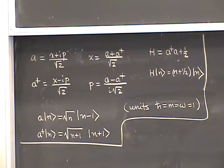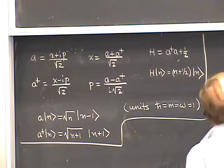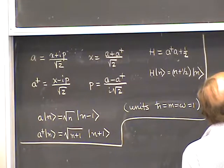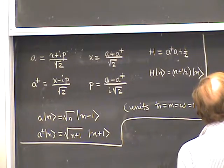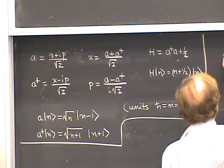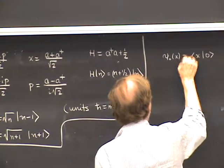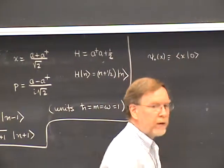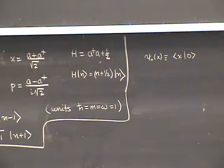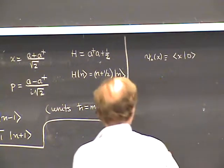Now I'd like to begin today with the subject of wave functions. In particular, let's talk about the ground state wave function. Zero is the ground state, and if I form the scalar product with the position eigenket X, we get what we consider to be the ground state wave function, called psi-zero of X. The question is: what is psi-zero of X?